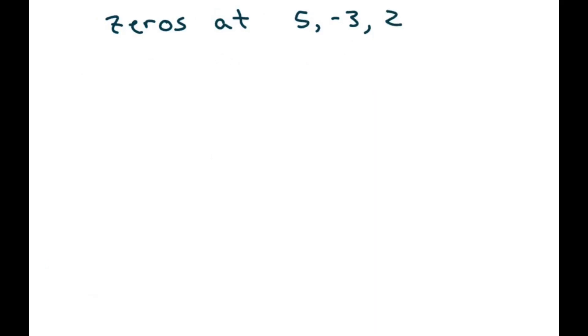Okay, the next one's similar. So we're just going to write this as y equals x minus 5, x minus negative 3, which is x plus 3, and then x minus 2. And that would be your answer if they allow that.